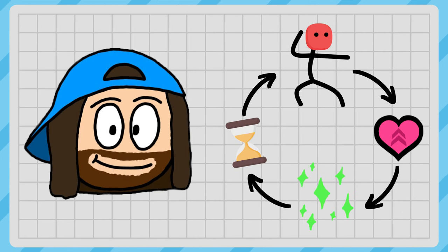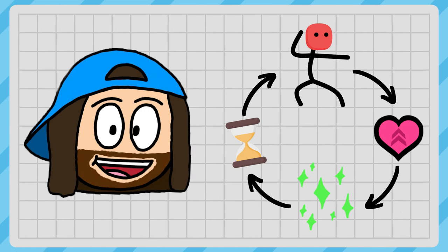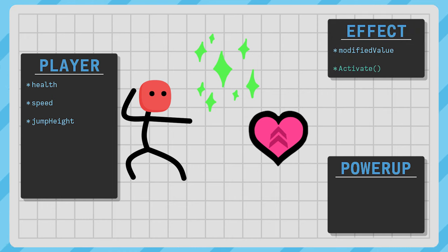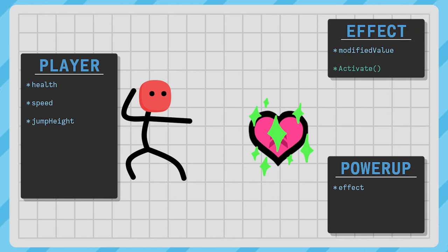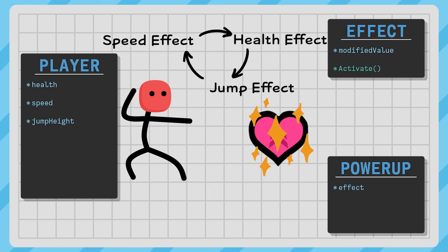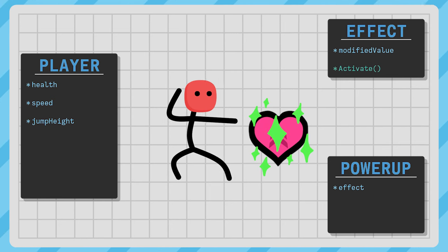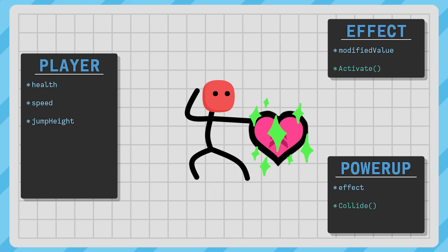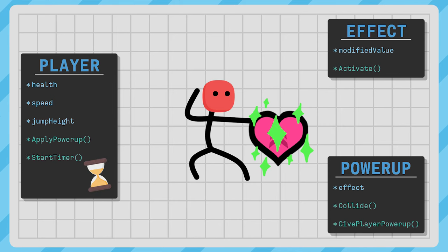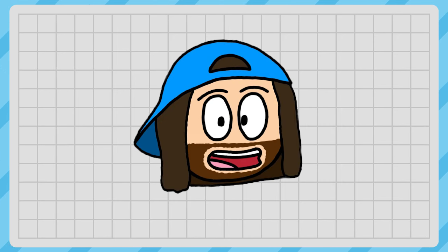Now that we've identified exactly what we need, we can determine how each part should interact with one another. The player and powerup will be their own separate objects, but the effects will be Scriptable Objects that we can assign to a powerup. This way, we can make prefabs of the powerups and swap the effects around with little effort. When the player collides with a powerup, the powerup gives an effect to the player. Since the player has all the stats, it should be the player's job to apply that effect, and since the player is handling the effect, they should also keep track of the timer. We've got our plan, so let's build it.